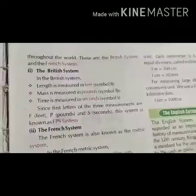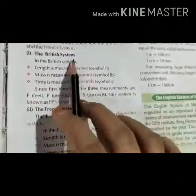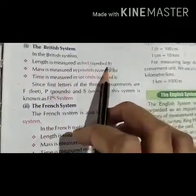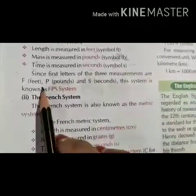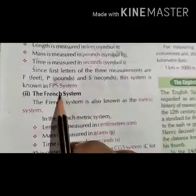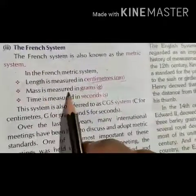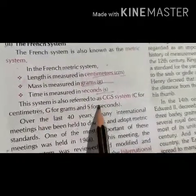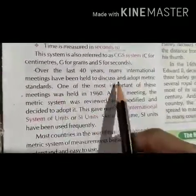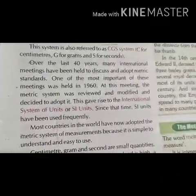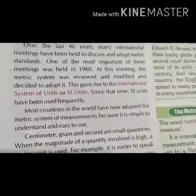There are two types of measurement systems commonly used throughout the world. In the British system, length is measured in feet (ft), mass in pounds (lb), and time in seconds (s) — this is known as the FPS system. The CGS system, also known as the metric system, measures length in centimeters, mass in grams, and time in seconds. Over the last 40 years, many international meetings have been held to discuss and standardize metrics. One of the most important meetings was held in 1960, at which the metric system was revised and modified.